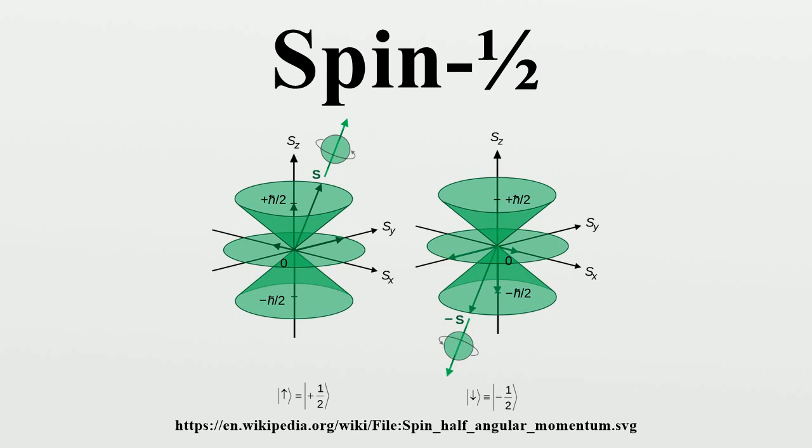Unlike in more complicated quantum mechanical systems, the spin of a spin-one-half particle can be expressed as a linear combination of just two eigenstates, or eigenspinors. These are traditionally labeled spin-up and spin-down.